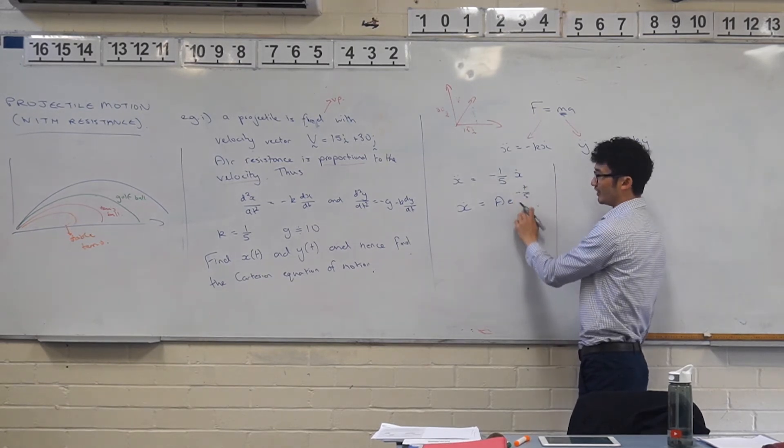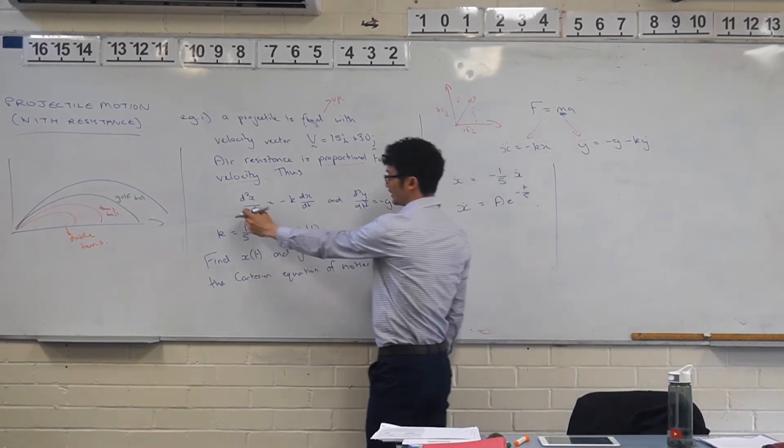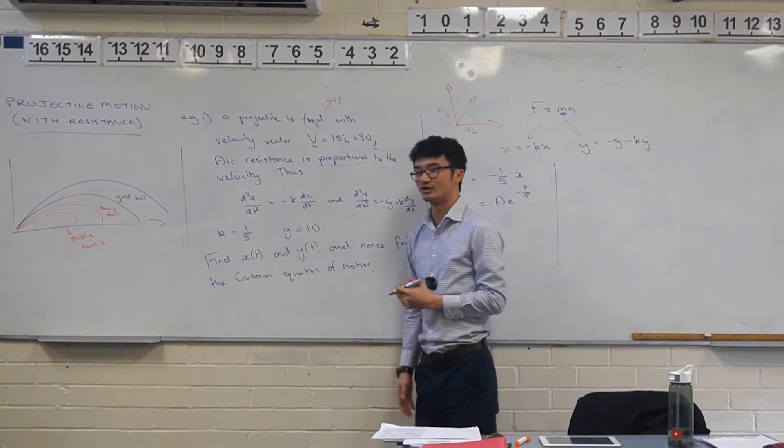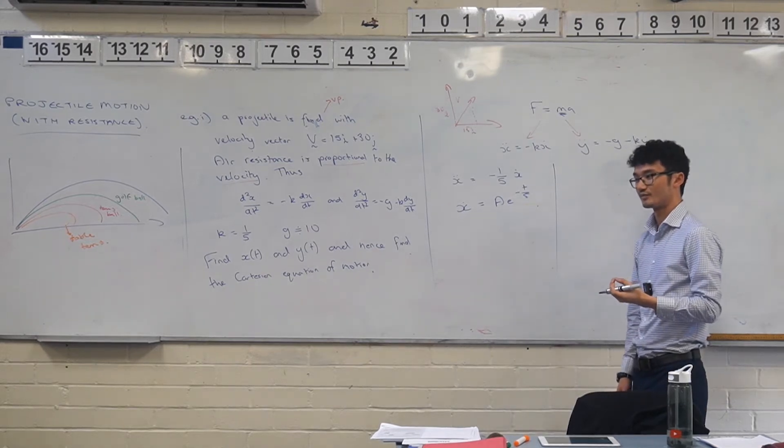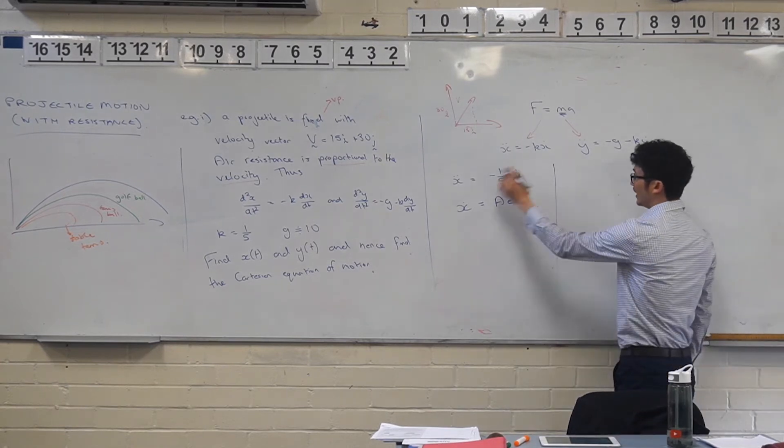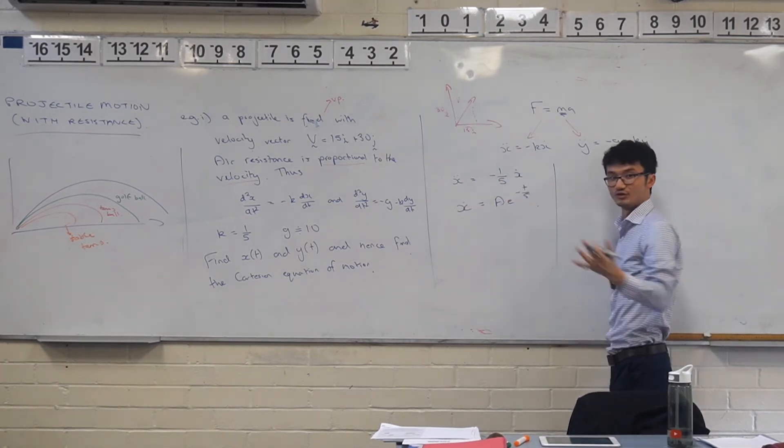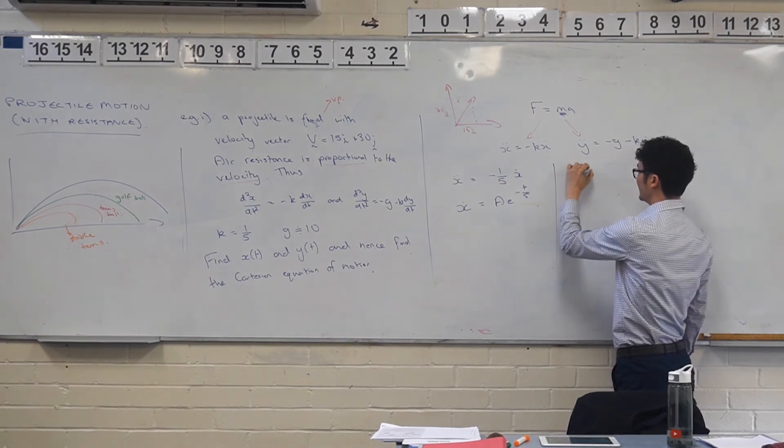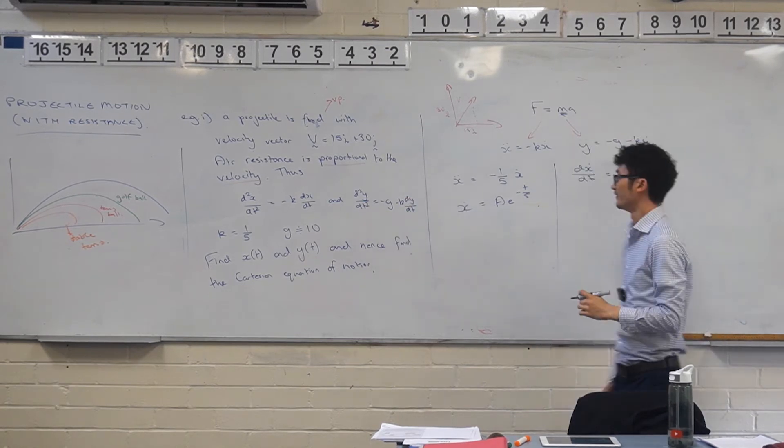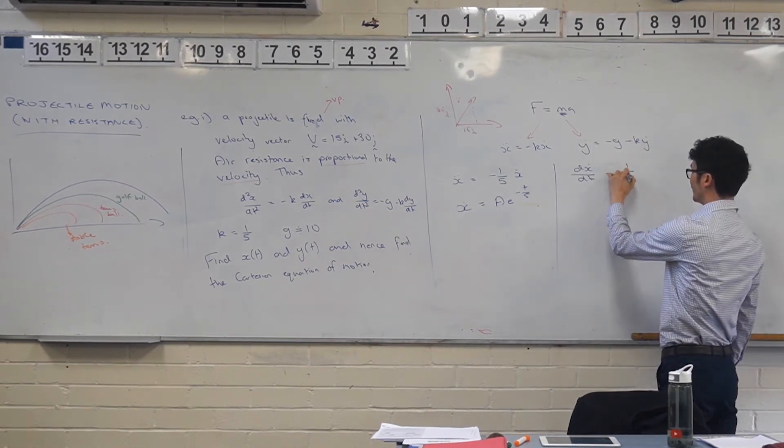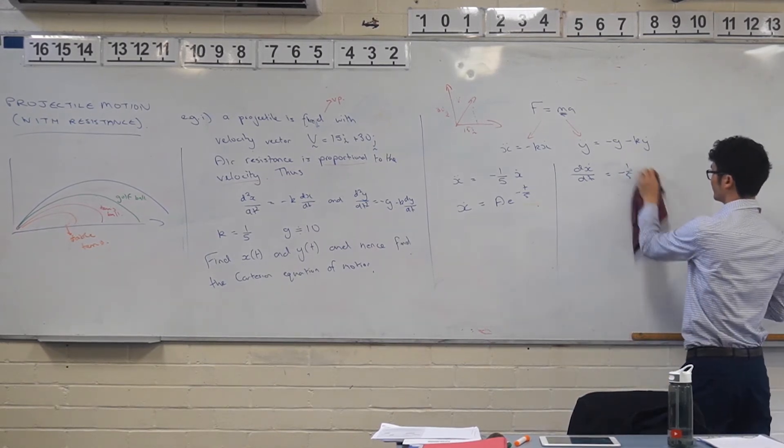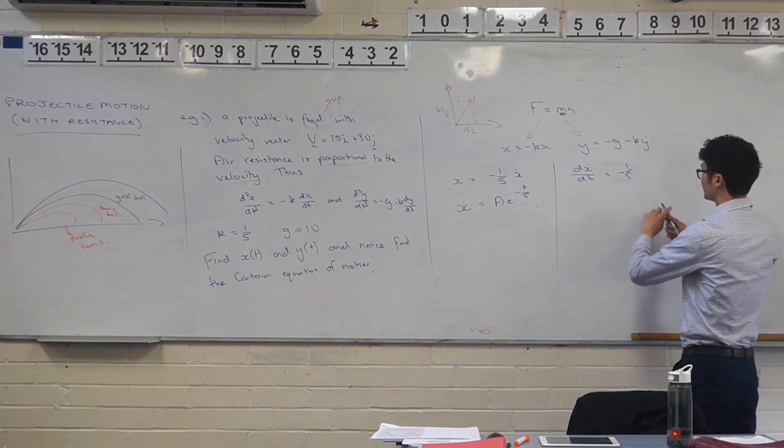This form here is actually something that you can remember. Because it's a differential equation, a lot of differential equations end up being logarithms or exponentials. This one is an exponential. This is the differential equation, and the solution is x dot equals ae to the negative t on 5. So you can actually solve this in one line.